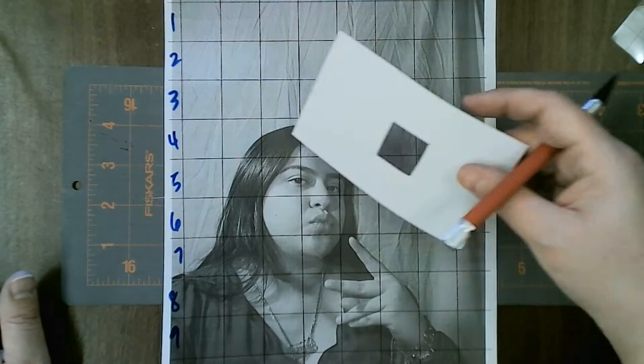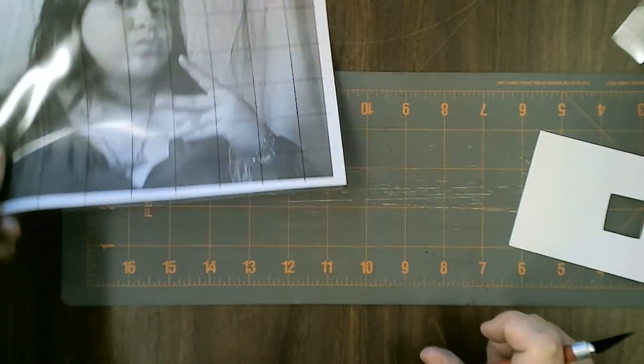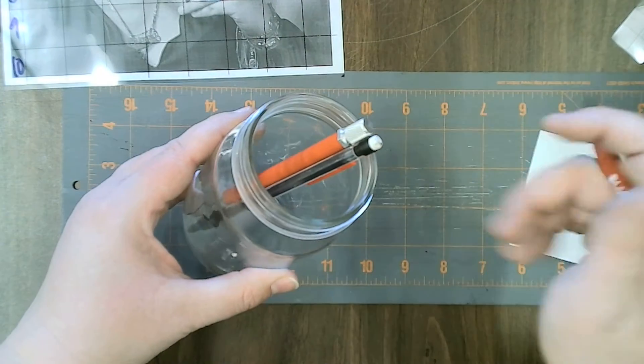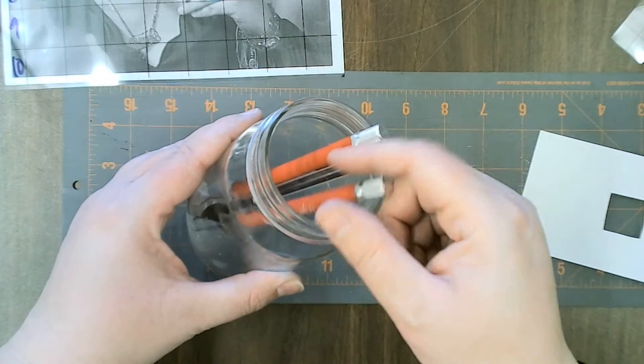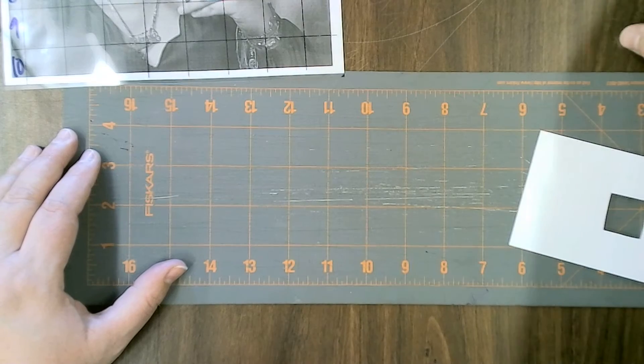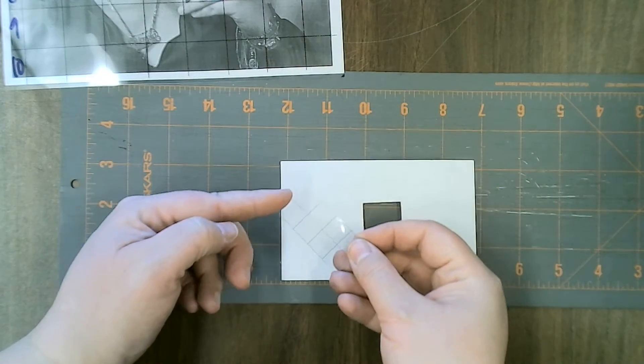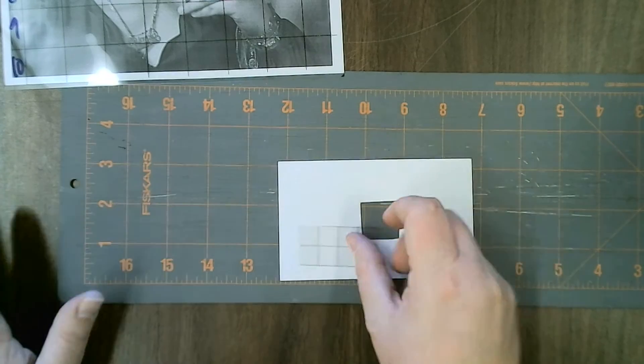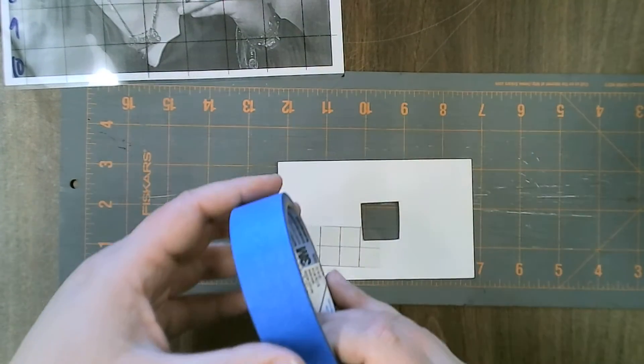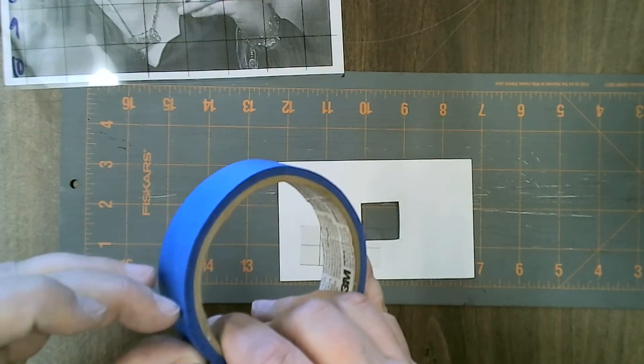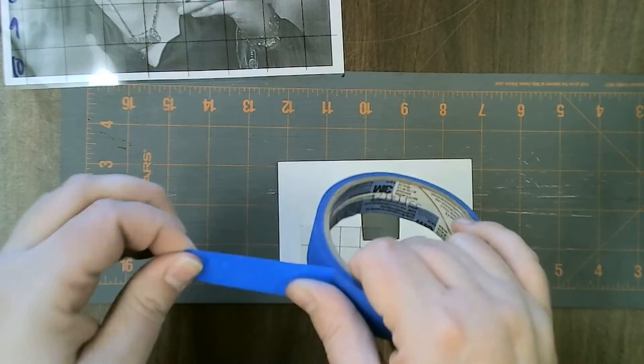So for the next step, when you return the exacto knife with blade facing down, there's a container in the back that has smaller transparency grids. There's also a roll of blue tape back there, and you just need two little pieces.